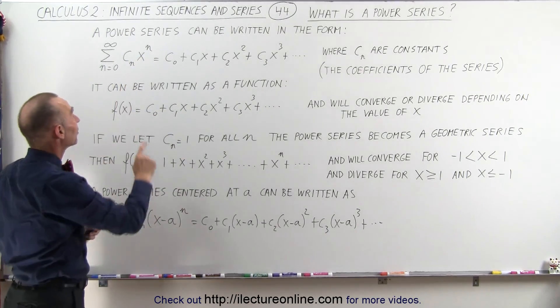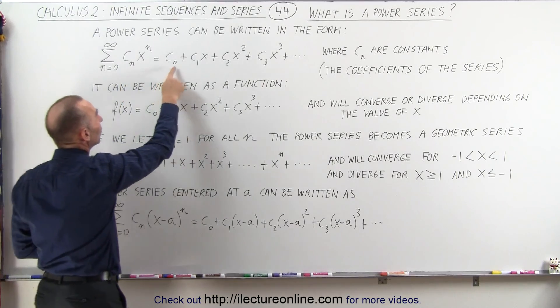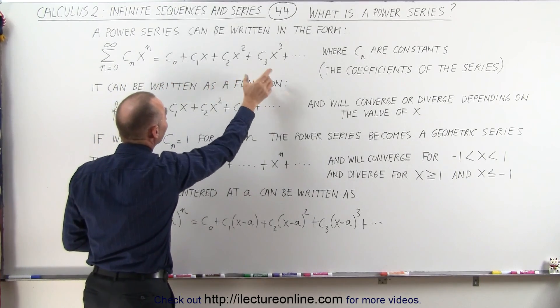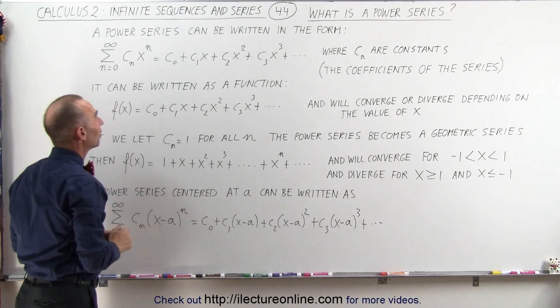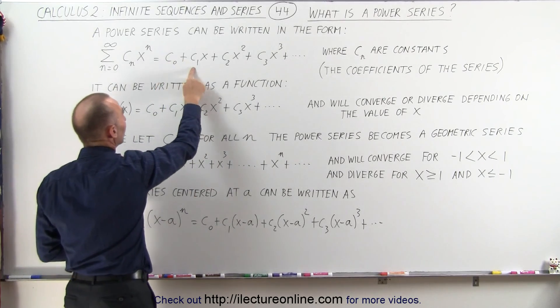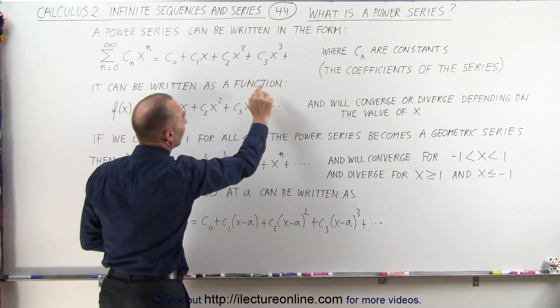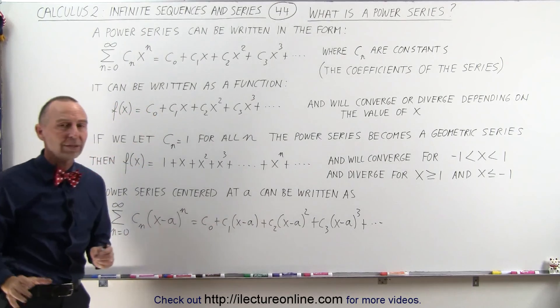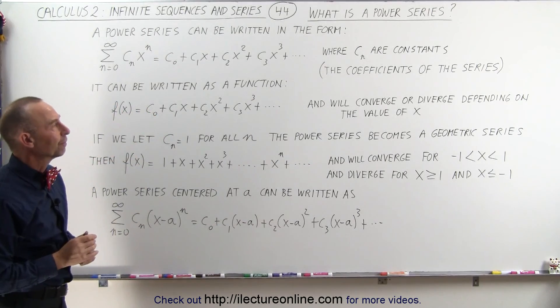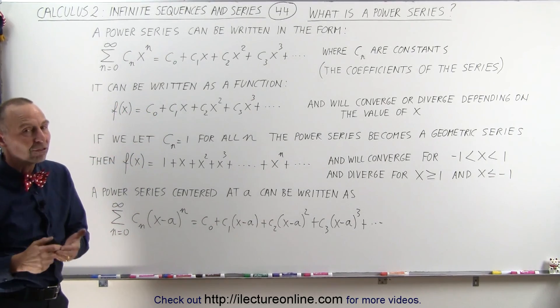Now, the big difference here is the c sub n, which means that the constant will be different for every term in the series. You can see c sub 0, c sub 1, c sub 2, c sub 3. They're all constants, but they can be different from one another. They're called the coefficients of the series.